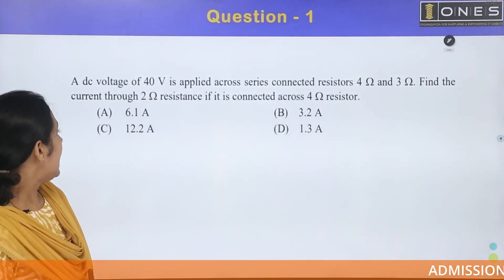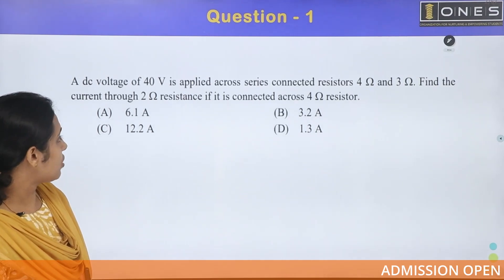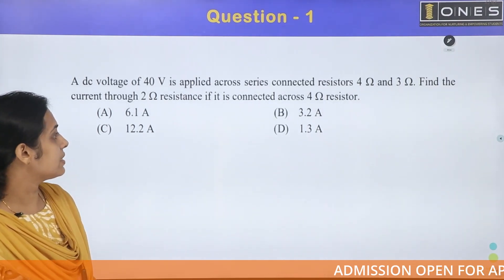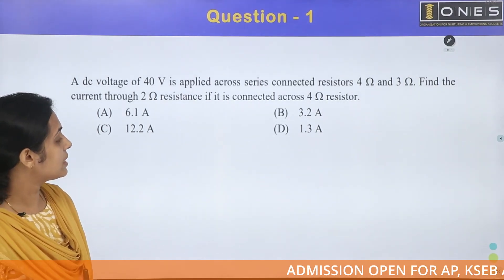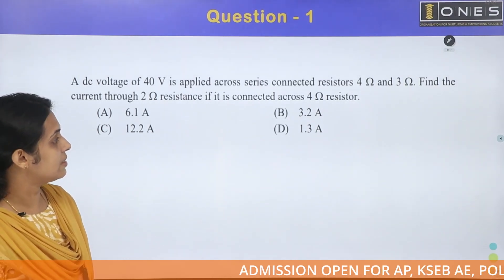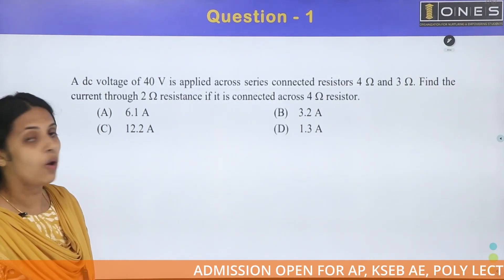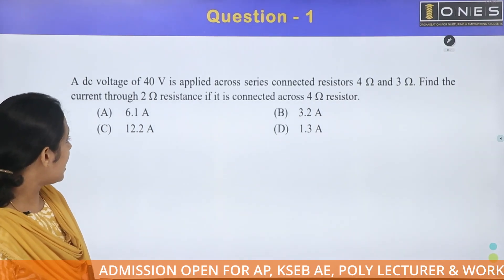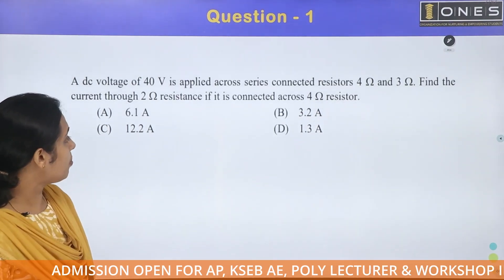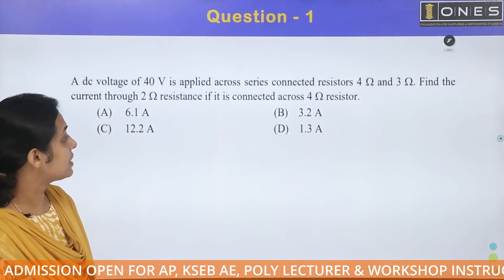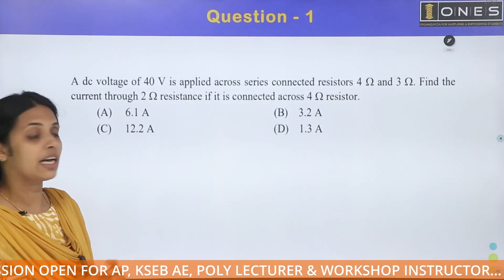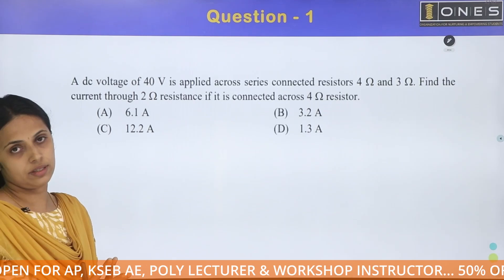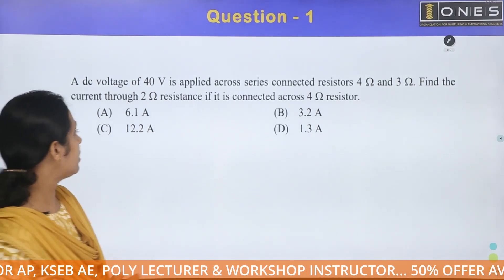First question. A DC voltage of 40 volts is applied across series connected resistors of 4 ohm and 3 ohm. Find the current through a 2 ohm resistance if it is connected across the 4 ohm resistor.